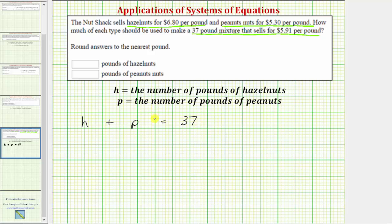Now write a second equation using the cost. The cost of the hazelnuts times the number of pounds of hazelnuts plus the cost of the peanuts times the number of pounds of peanuts must equal the cost of the mixture times the number of pounds of the mixture. Which means $6.80 times h, or 6.8h, would give us the cost of the hazelnuts, plus $5.30 times p, or 5.3p, would give us the cost of the peanuts.